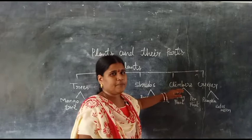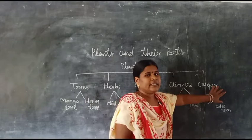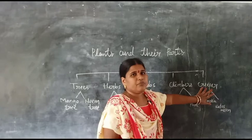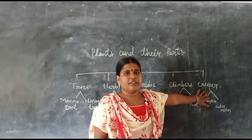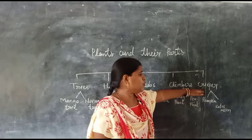Now let us know about creepers. Creepers creep on the ground. These plants creep on the ground because of their heavy and big fruits — they cannot stand straight, so they creep on the ground. Examples of creepers are pumpkin and watermelon.